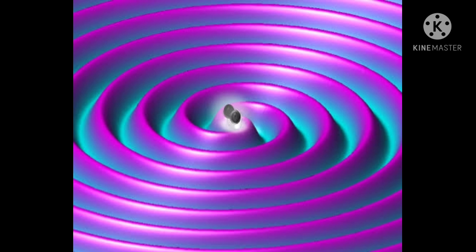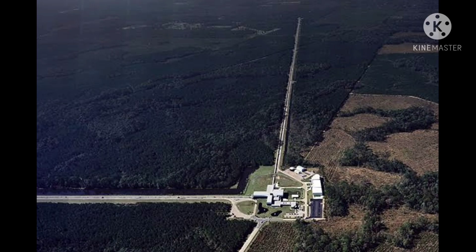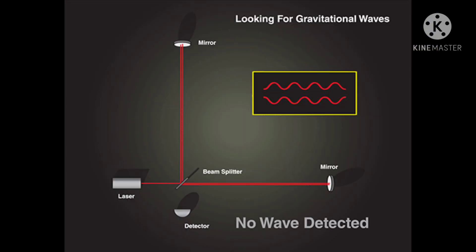Scientists call these ripples of space gravitational waves. Let us see how these waves are detected. These waves are mainly detected by using an observatory called LIGO, which stands for Laser Interferometer Gravitational-Wave Observatory.